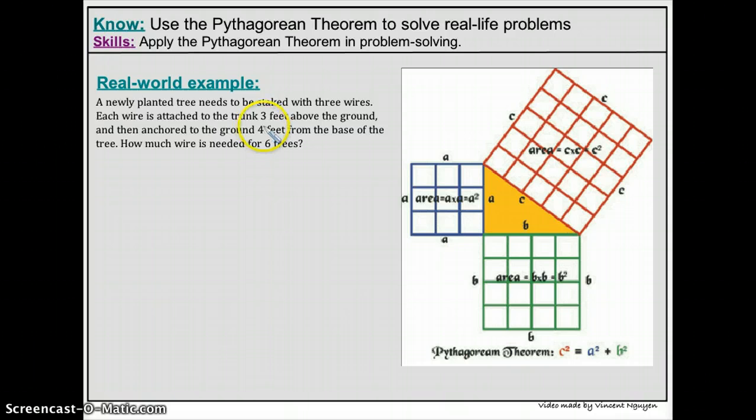So when you read word problems, since there's so much information that are given in words, you need to pay attention to what's important, what's not important. So right now, we know that the tree has three wires. Each tree has three wires. And we're going to need wires enough for six trees.